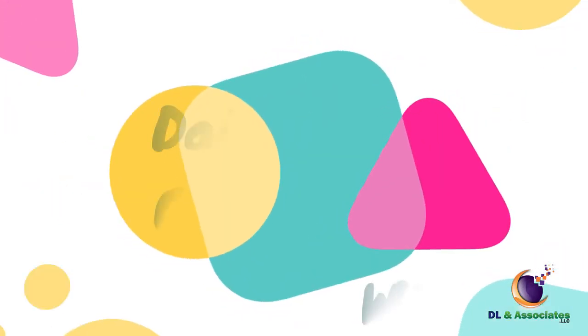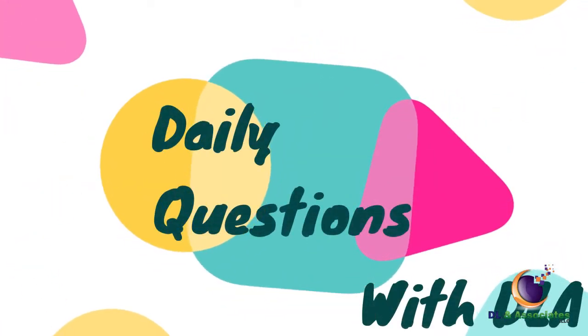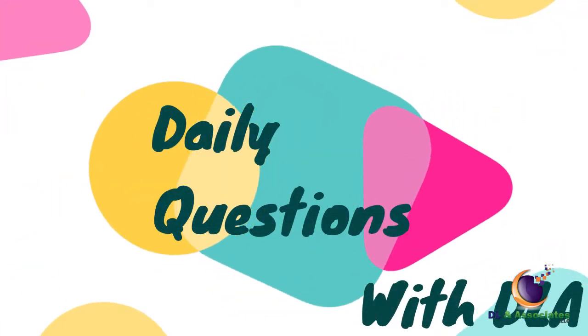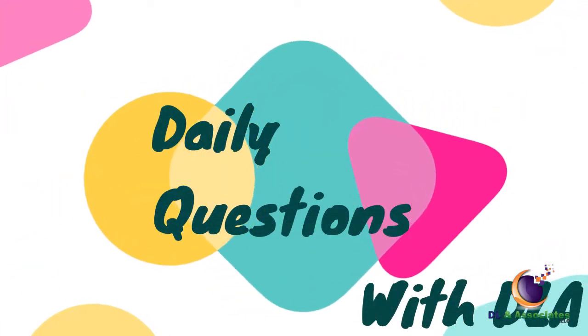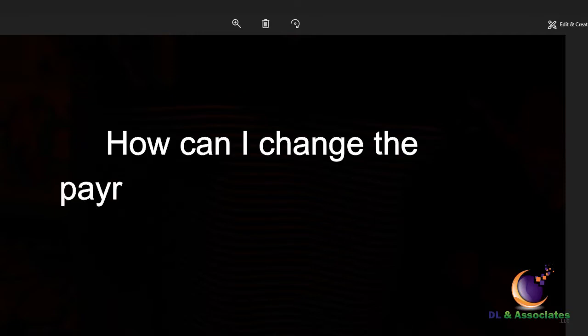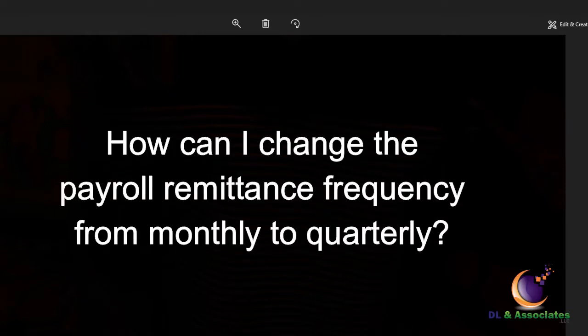Welcome to the daily questions with DLA. Today's question is: how can I change the payroll remittance frequency from monthly to quarterly?